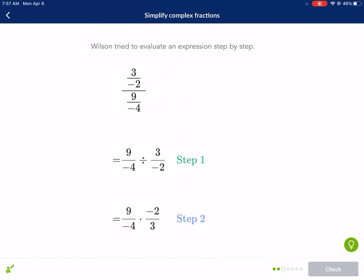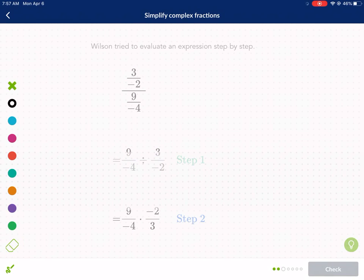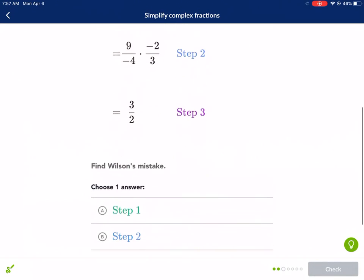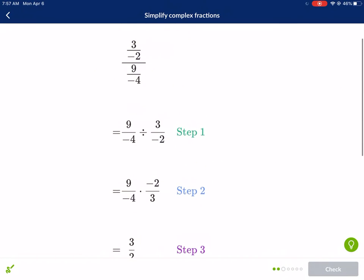Wilson tried to evaluate an expression step by step. We should probably look at all the steps. Find Wilson's mistake. Maybe he didn't make mistakes. So let's find out.